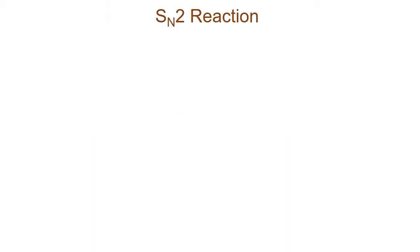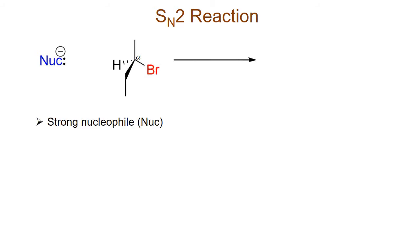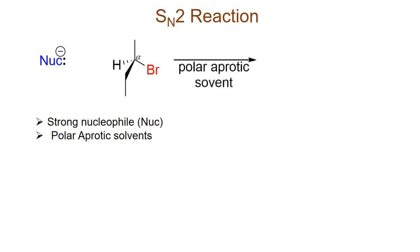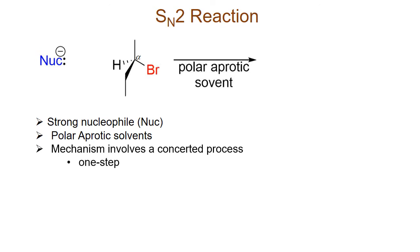An SN2 reaction is the reaction between an alkyl halide and a nucleophile. The nucleophile in this reaction is usually a strong nucleophile and the reaction is facilitated in polar aprotic solvents. As far as the mechanism of the reaction is concerned, it involves a concerted process. This means that all bond forming and bond breaking events take place in a single step.